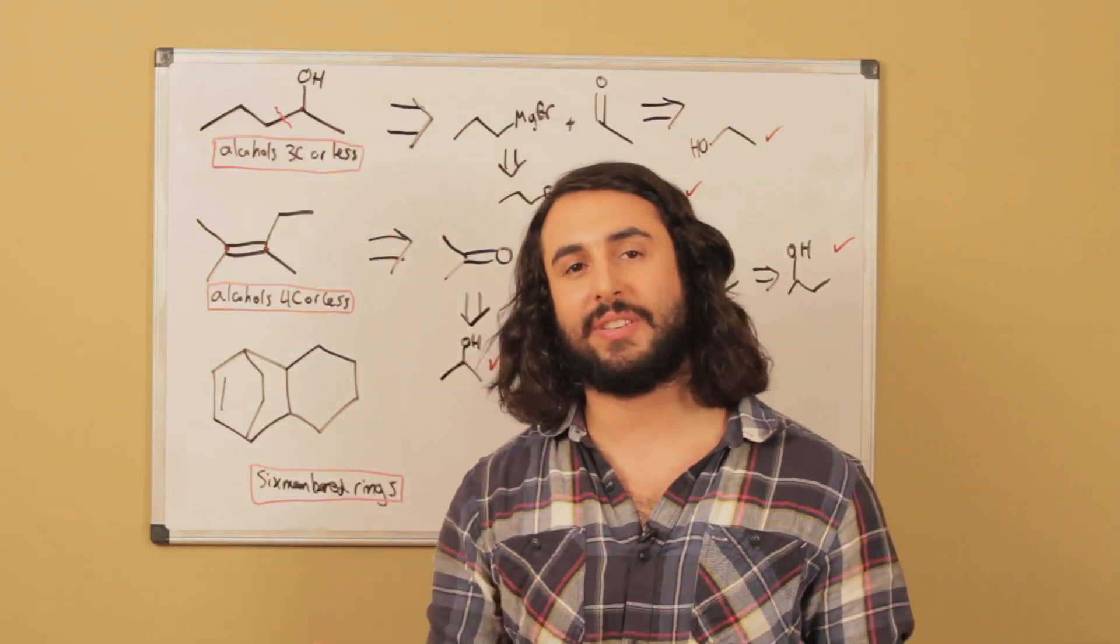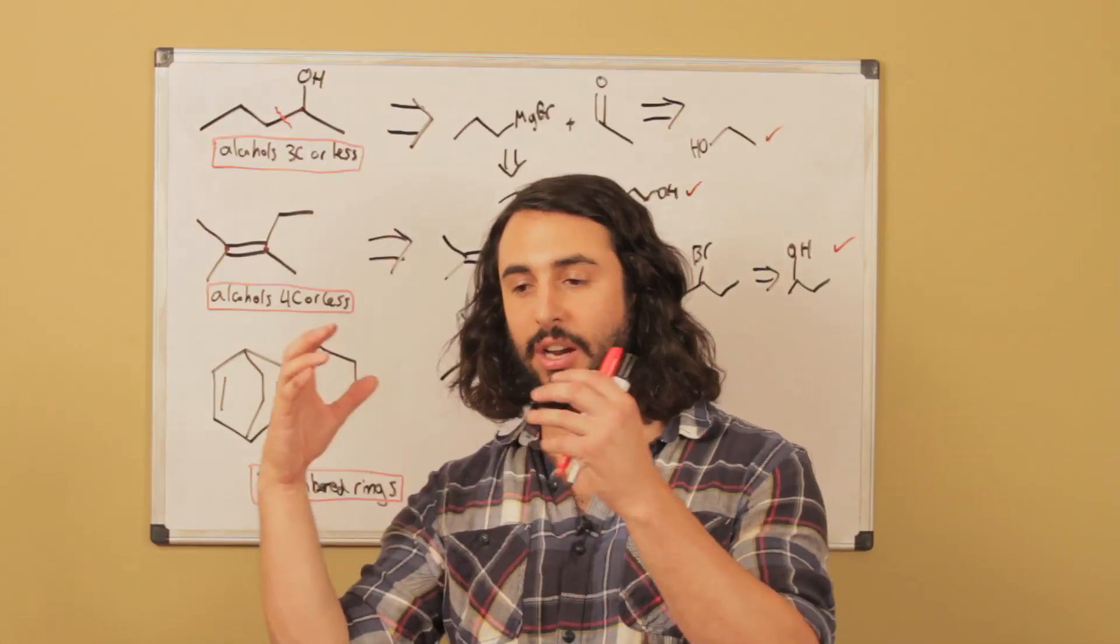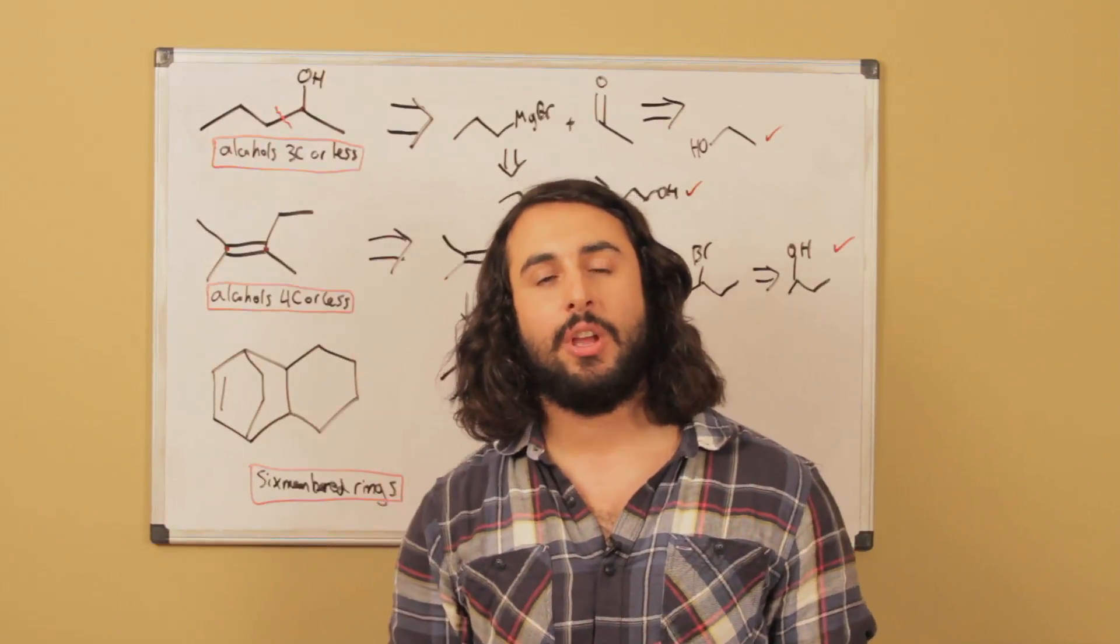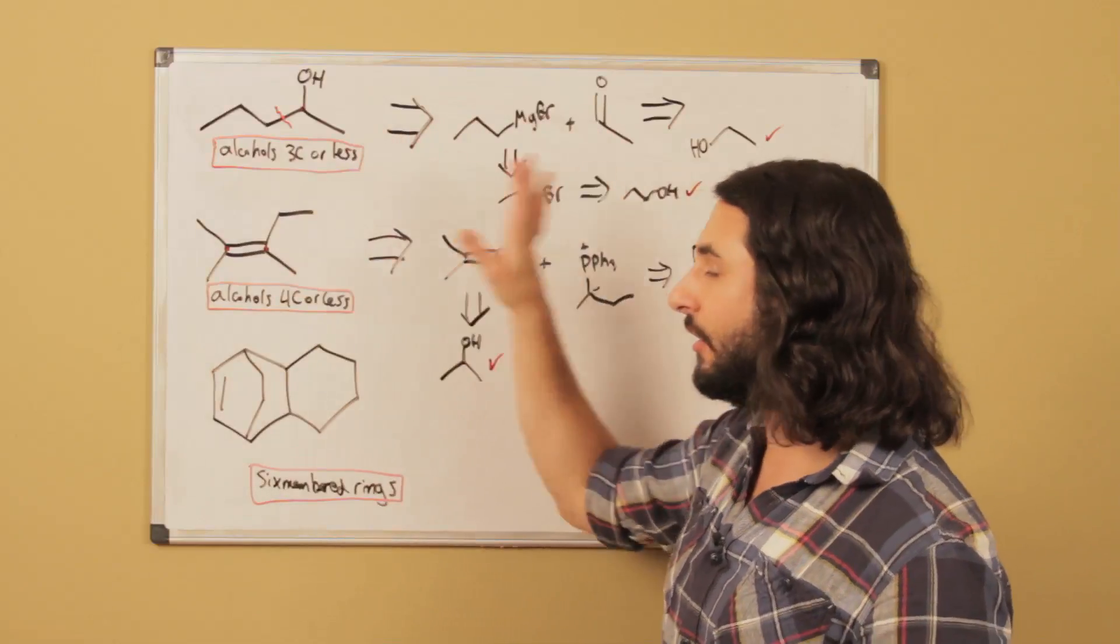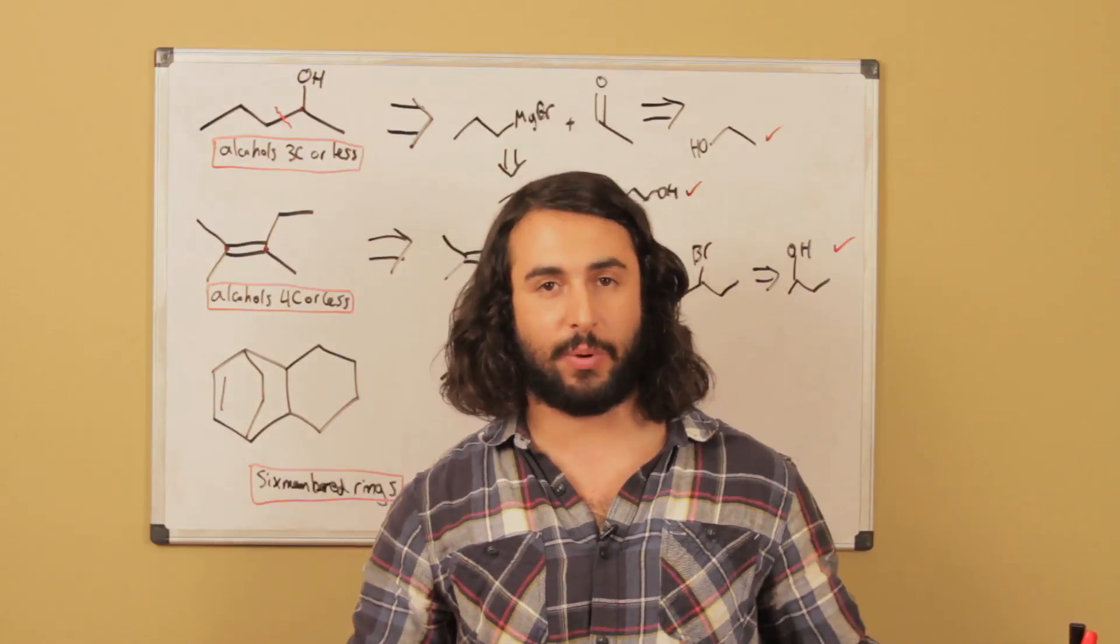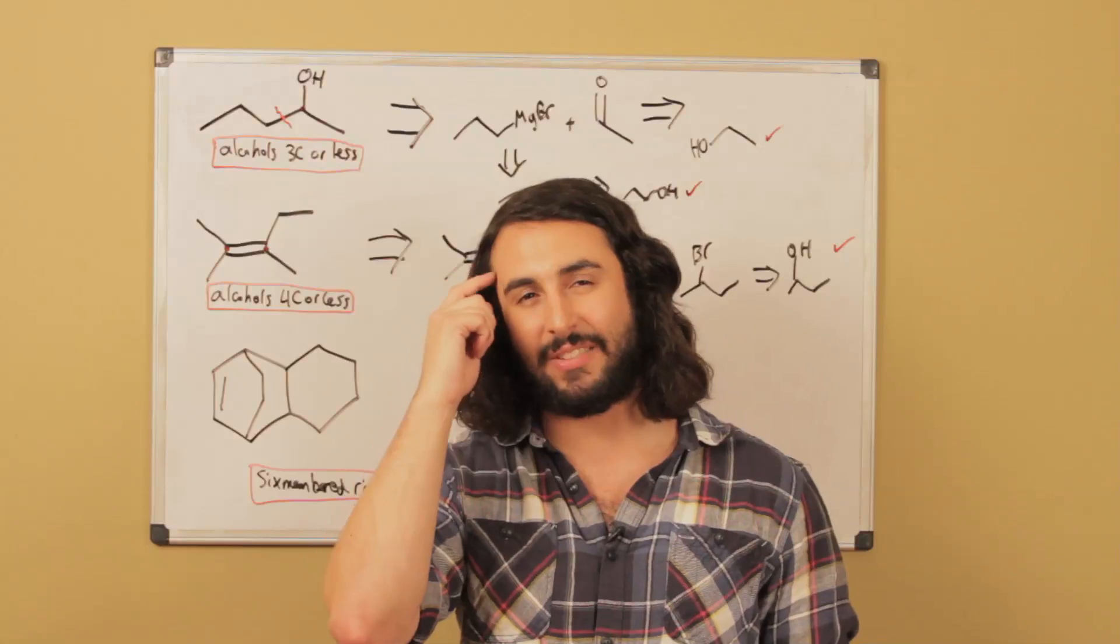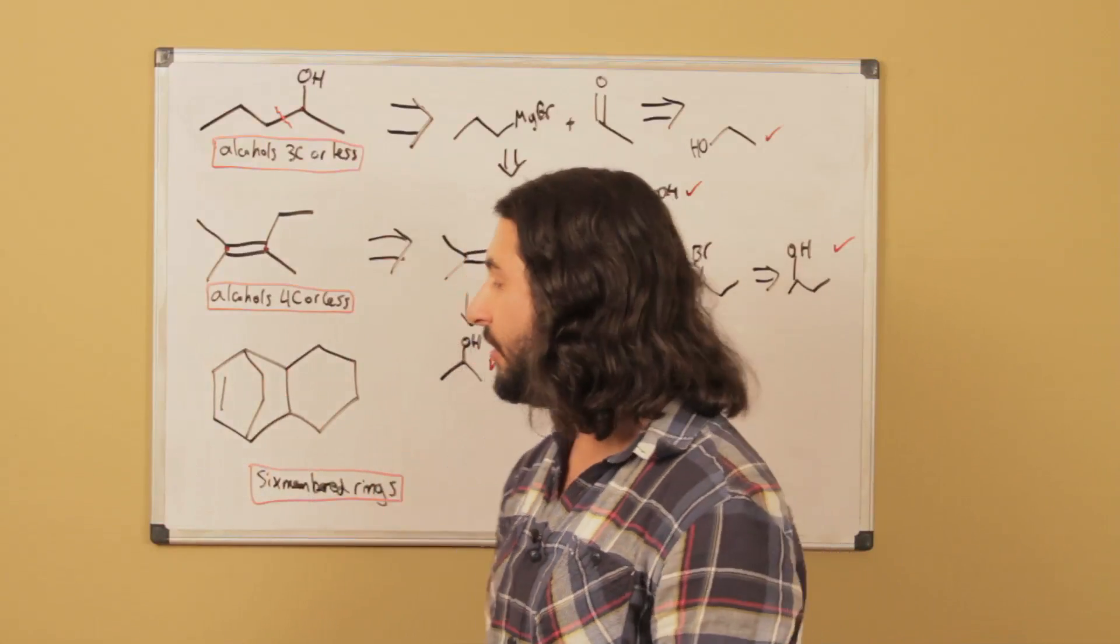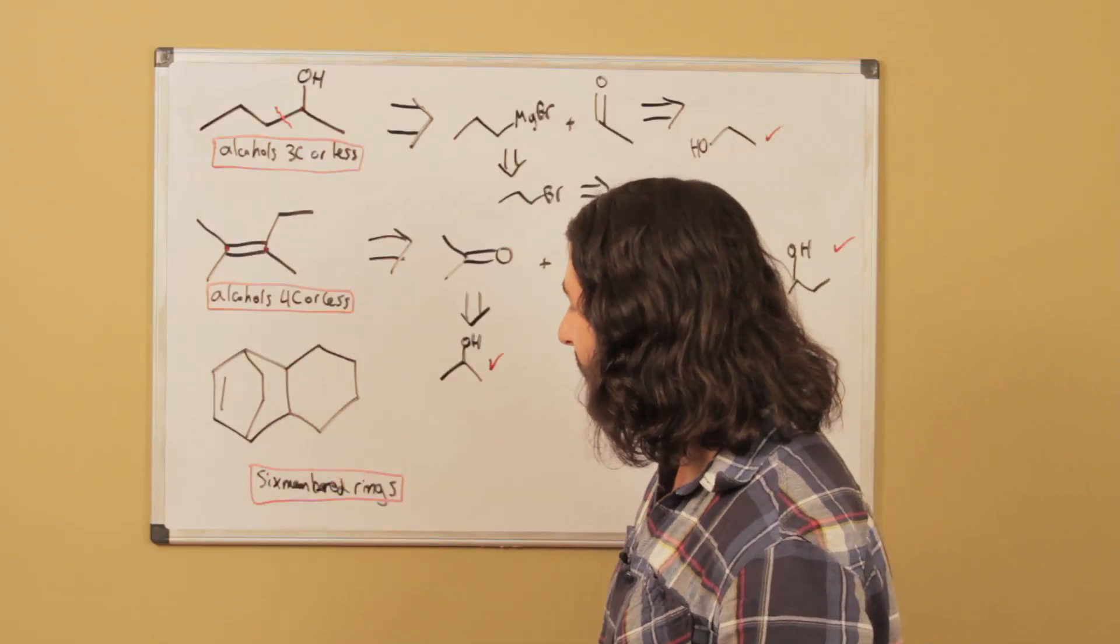Sometimes, maybe in a quiz, instead of saying here are some reactants, what do you get, we might have a product and ask what did it come from. Even if it's not a very large multi-step pathway but just one step, we still have to think retrosynthetically. Where did this come from? Let's say we want to form this from six-membered rings. What makes six-membered rings? Diels-Alder reaction.